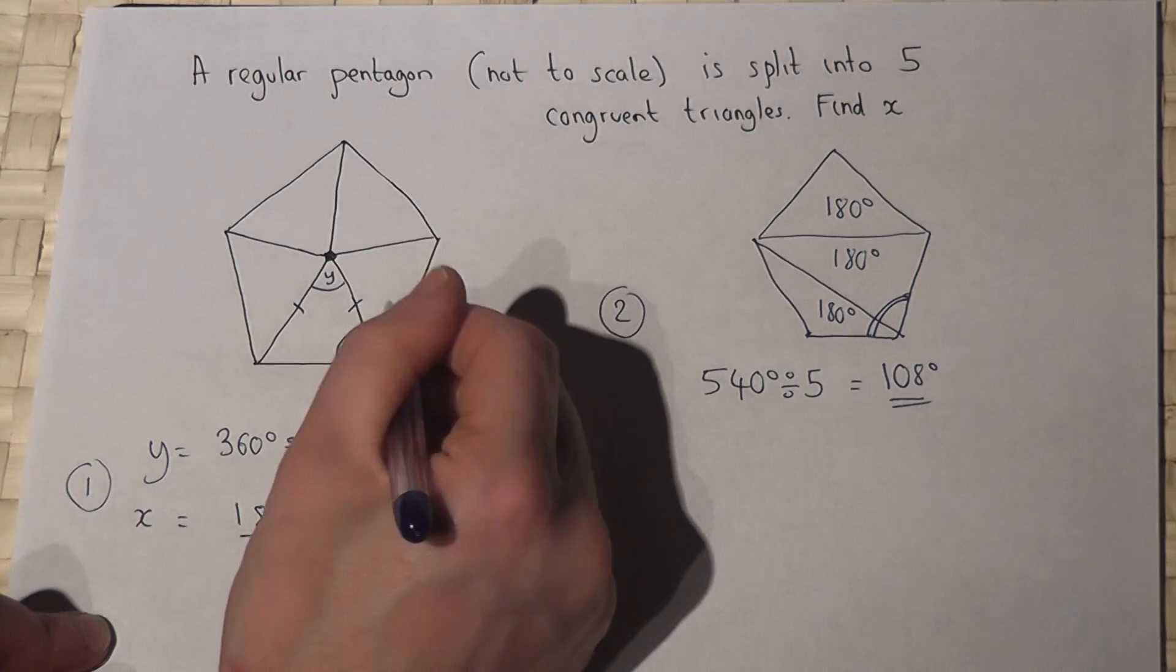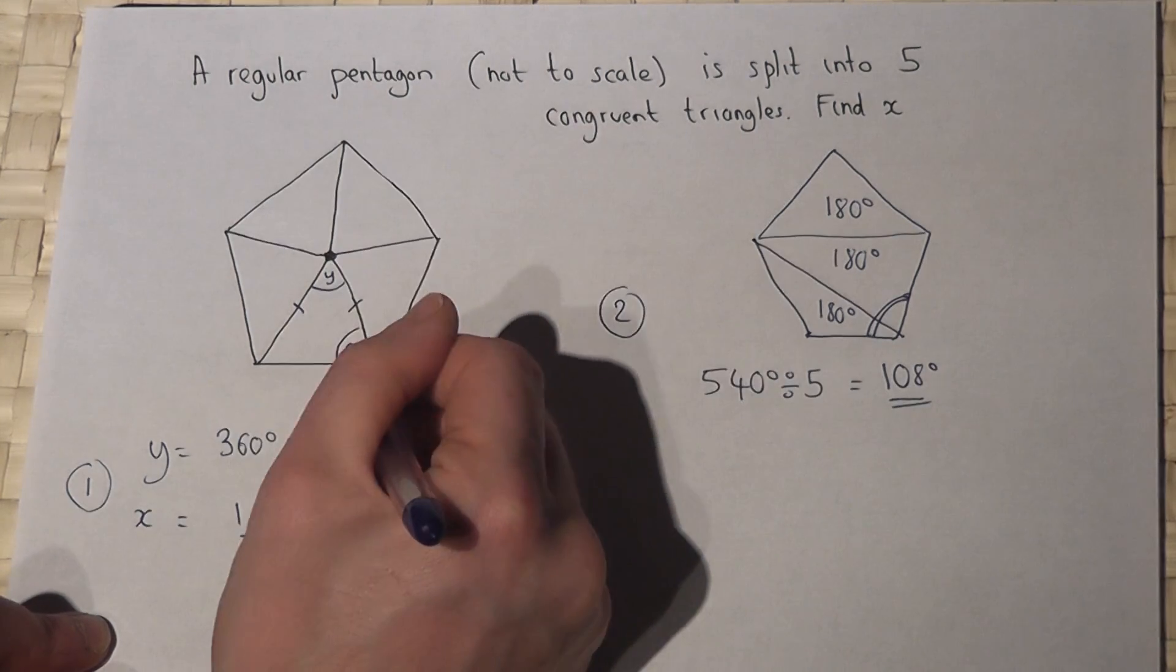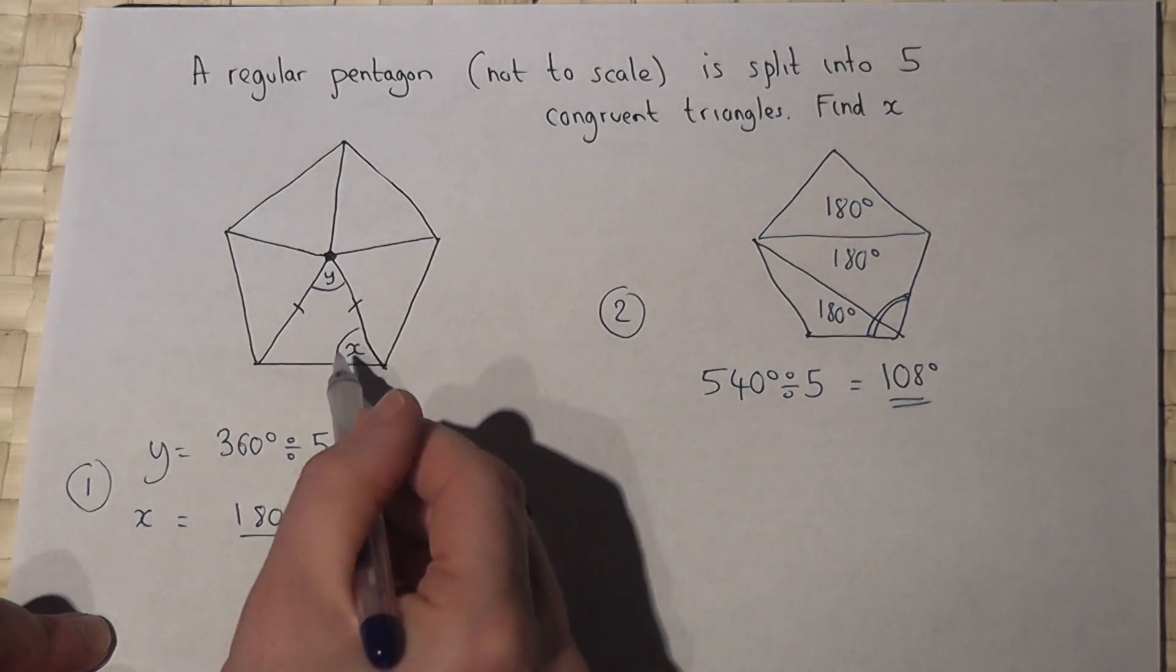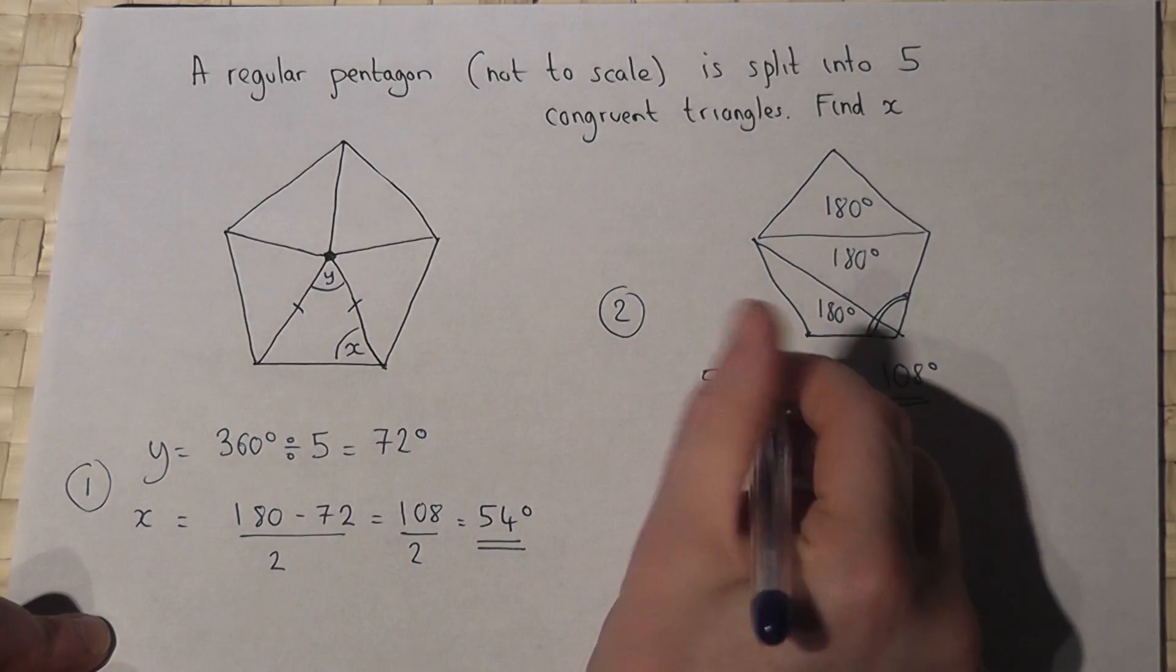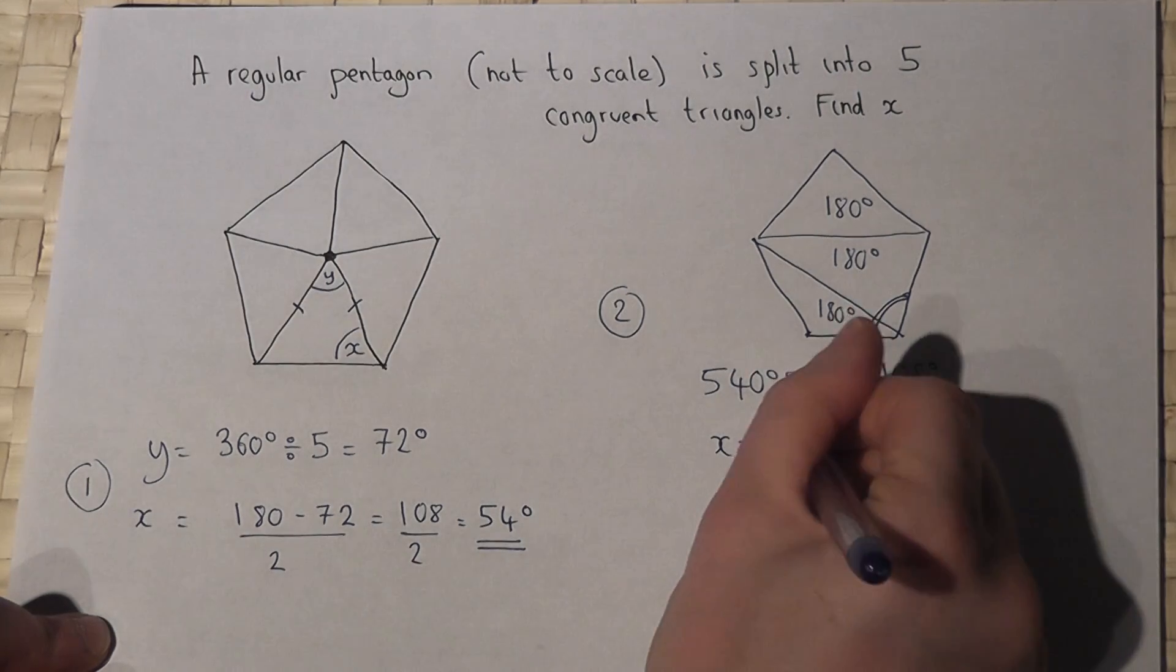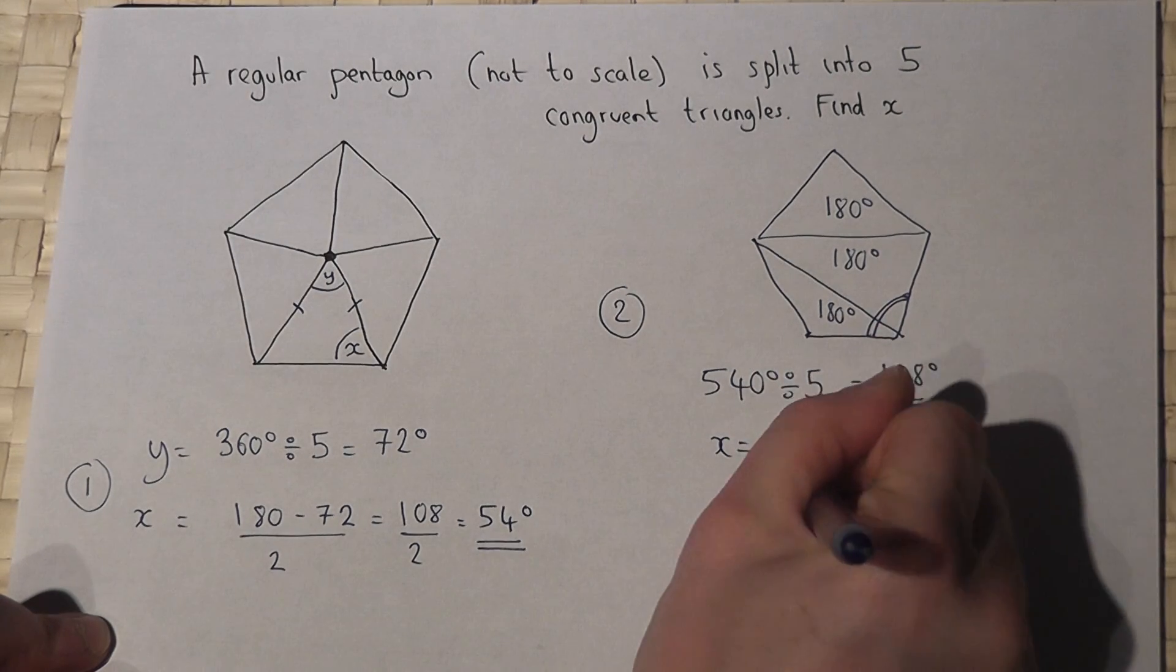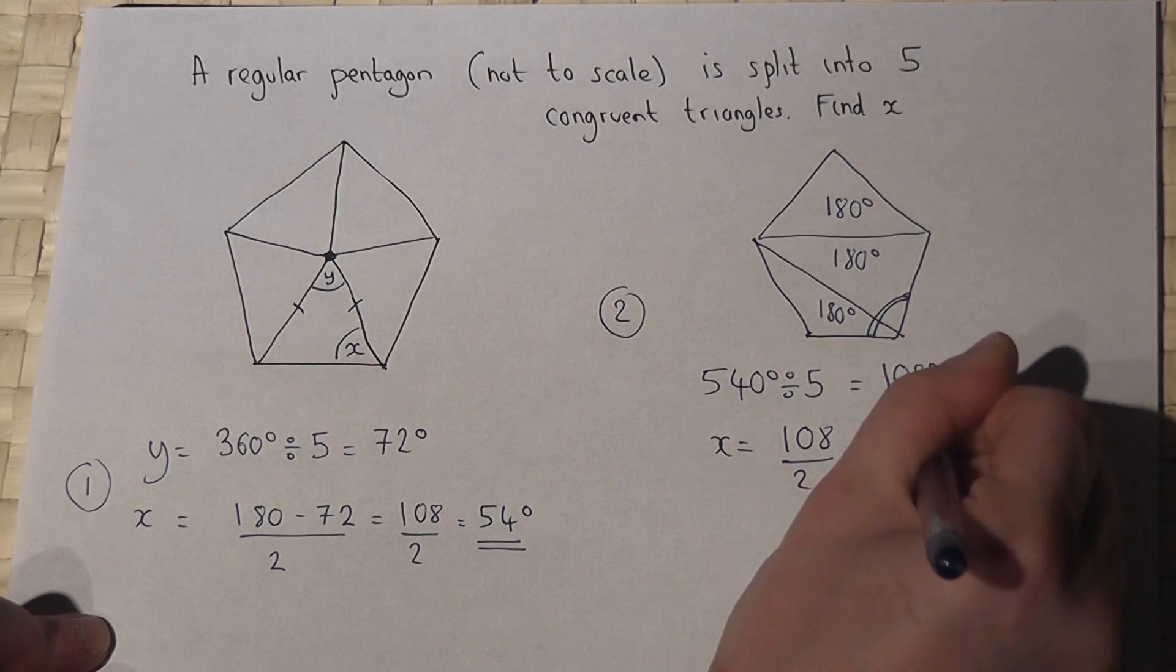Now to find X, if the whole angle there is 108 degrees then X must be half of that. So X as before just equals 108 divided by 2 which is 54 degrees.